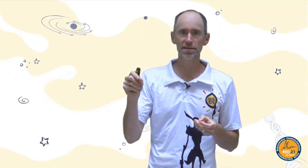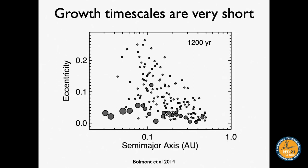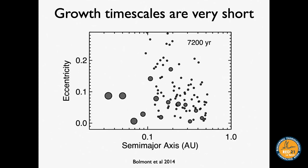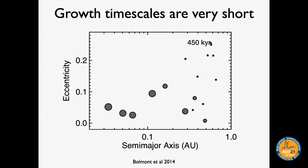We know that growth timescales very close to a star are very short. This animation shows a population of rocky material thrown close to a star, colliding and growing. The y-axis is orbital eccentricity and the x-axis is orbital radius. Within just a few thousand years, even the planets that were very close in were basically fully grown.